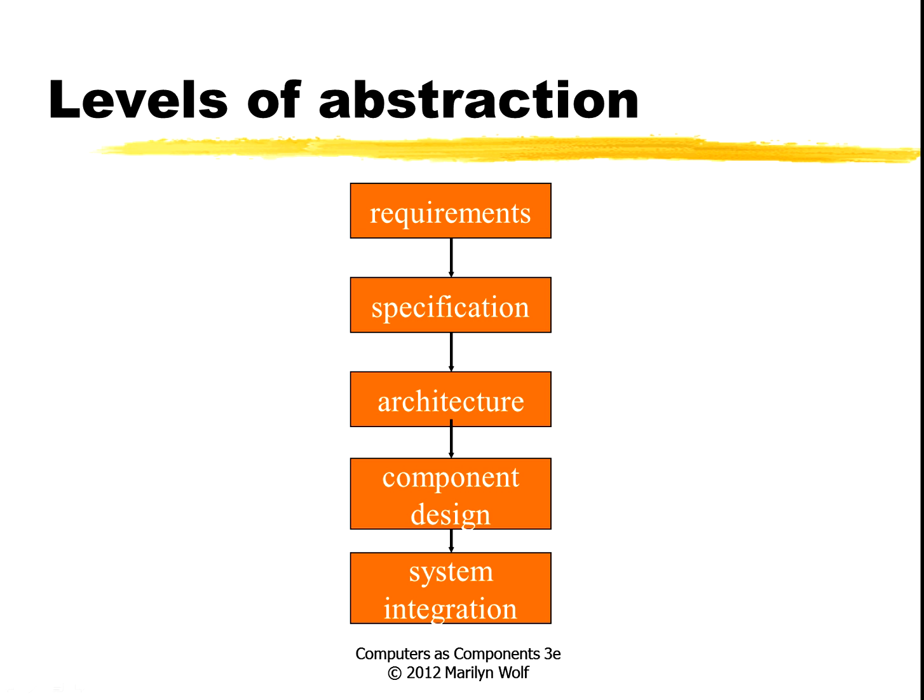A specification is a little more precise, a little more detailed, and it's something that you can hand off to the design team and they know what you're talking about. But it's important to remember that a specification is not an architecture. You don't want the specification to say too much about how you're going to build the system. You need to say what the system is supposed to do — its performance, its power consumption — but not the details of the design.